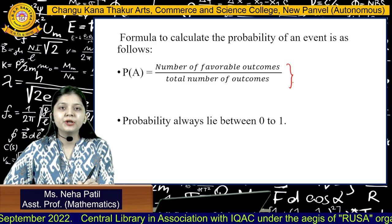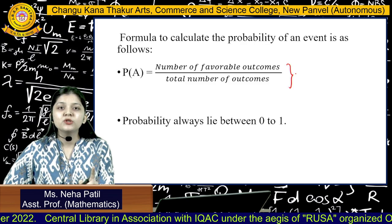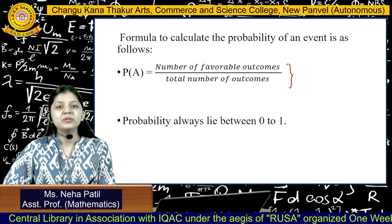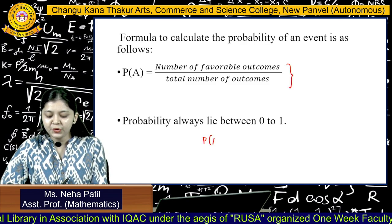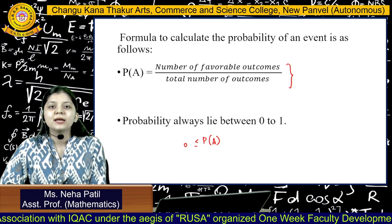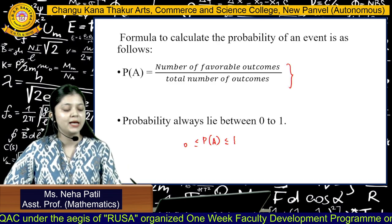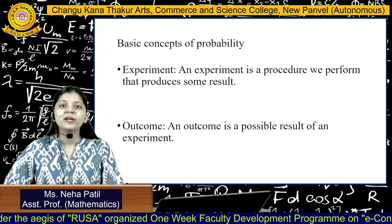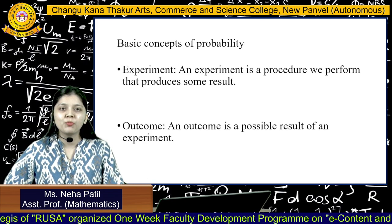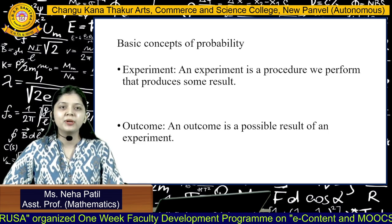Whenever you calculate the probability, remember this one thing that it will always lie between 0 to 1. Now, let us understand the basic concepts of probability with the help of a simple example.